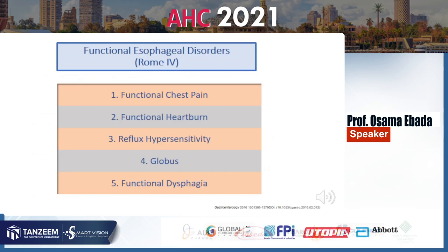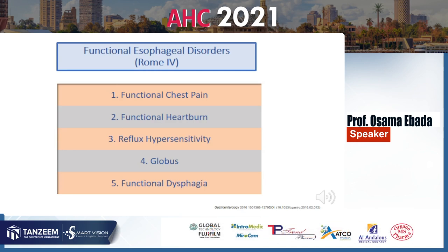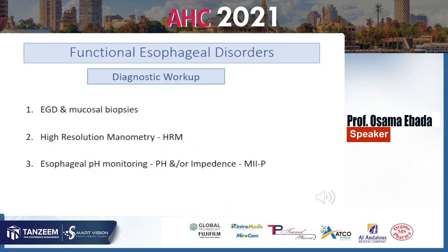According to Rome 4, esophageal functional disorders have been divided into functional chest pain, functional heartburn, reflux hypersensitivity, globus, and functional dysphagia.